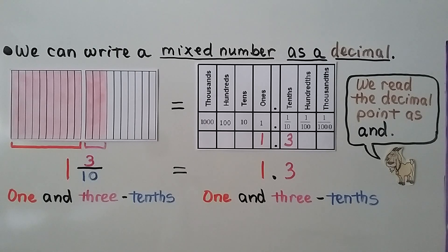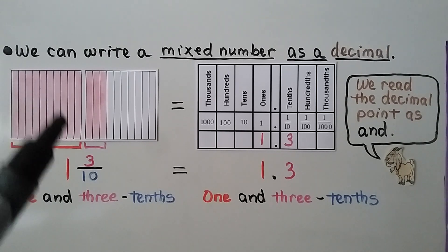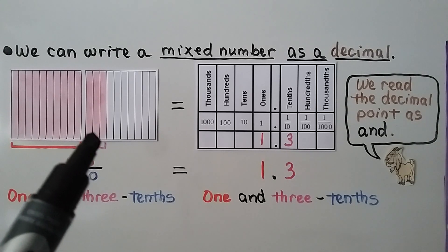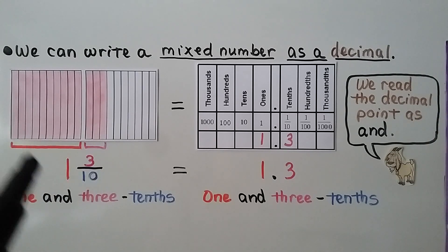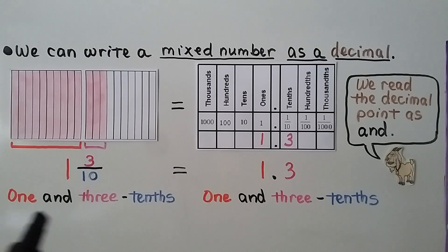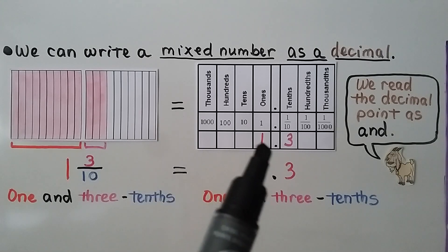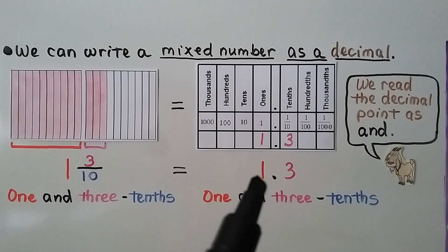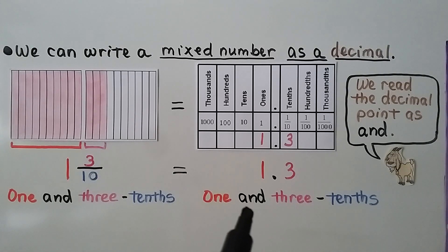We can write a mixed number as a decimal. Here we have one whole — ten equal parts, all ten shaded, so that's ten-tenths. And we have three-tenths shaded on the next model. That gives us one and three-tenths, written by placing a one in the ones place and a three in the tenths place. We read the decimal point as 'and': one and three-tenths.